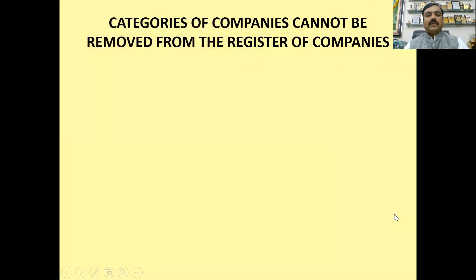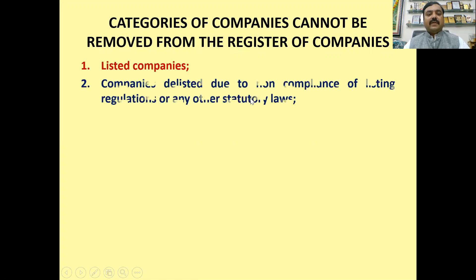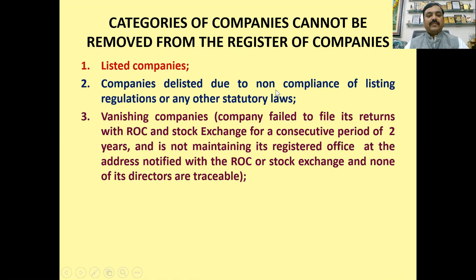Friends, first of all, we should know the categories of companies which cannot be removed from the register of companies. The first category is listed company. Second is companies which are delisted due to non-compliance of registry regulations or any other law. Vanishing companies are the ones that have not filed returns for two years, or have no registered office, or no director traceable.